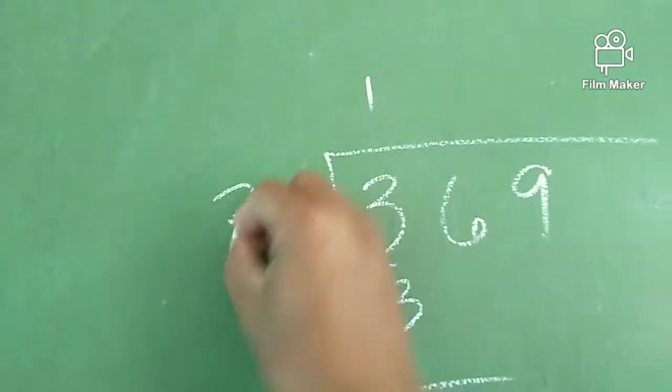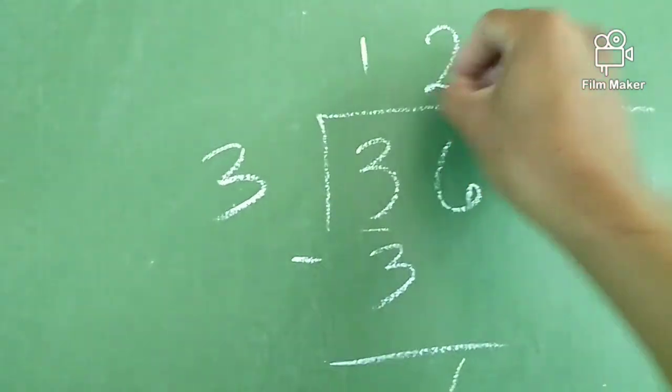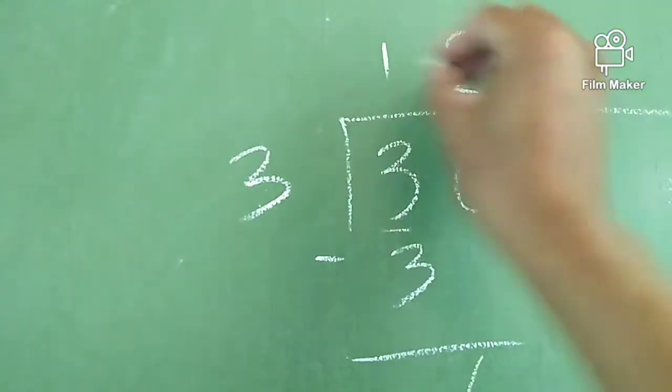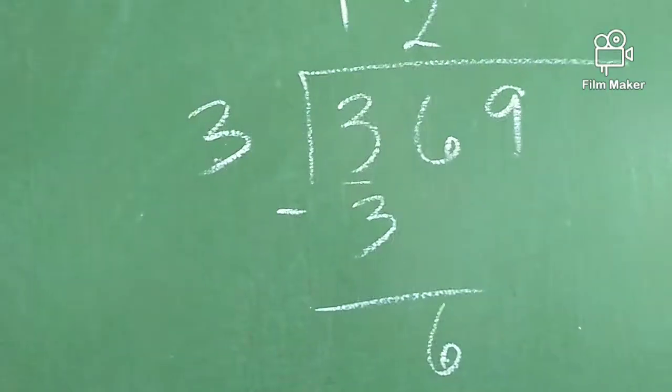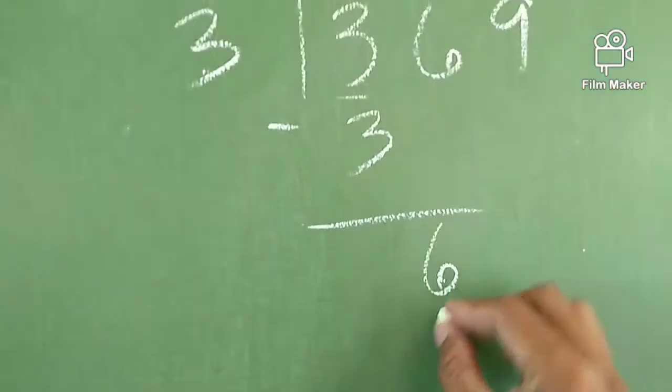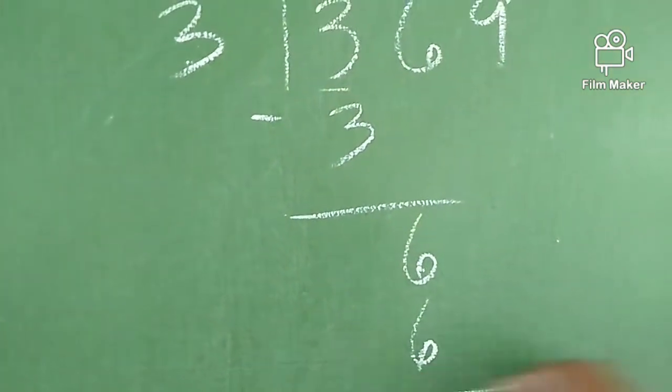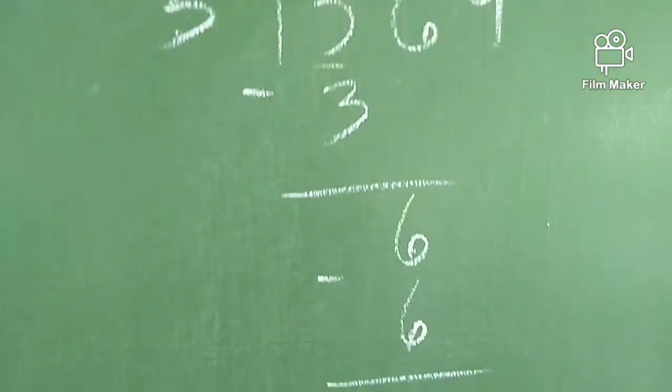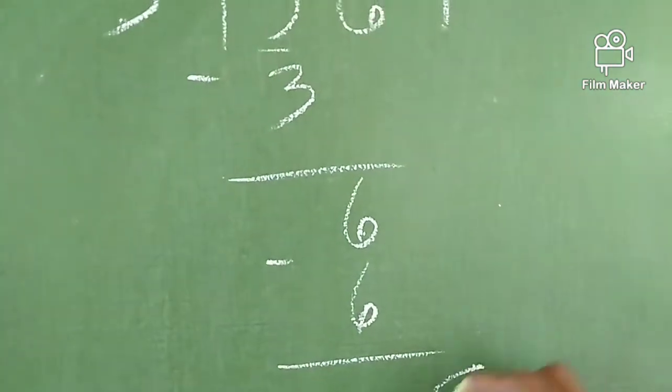6 divided by 3, we have 2. 2 times 3 — that's a multiplication — so we have 6. Subtract ulit, so wala na rin. 0.